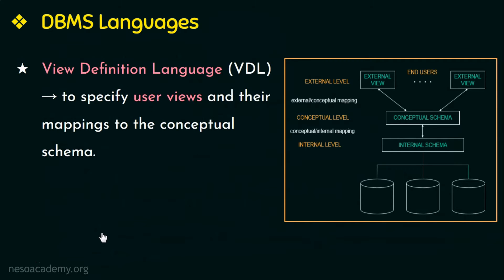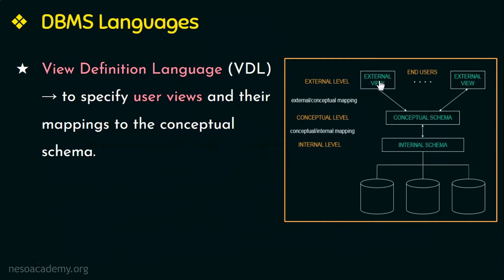For a true three-schema architecture, another language called the View Definition Language or VDL is used to specify the user views and their mappings to the conceptual schema — that is, VDL specifies the views of each user group and the mapping between the external level and the conceptual level. But in most database management systems, DDL is more than enough to define both the conceptual schema and the external schemas.